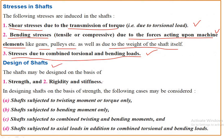The design of shaft is carried out on two criteria. One is the strength criteria and the other is the stiffness or rigidity criteria. These are the two basic criteria: strength criteria and rigidity criteria. Now, first of all, let's talk about the strength criteria.